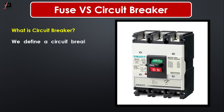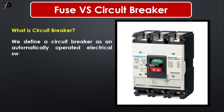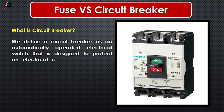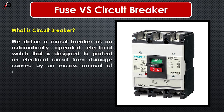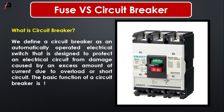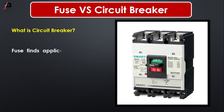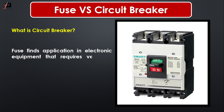What is a circuit breaker? We define a circuit breaker as an automatically operated electrical switch that is designed to protect an electrical circuit from damages caused by an excess amount of current due to overload or short circuit condition. The basic function of the circuit breaker is to interrupt current flow after a fault is detected.